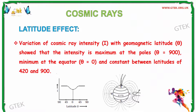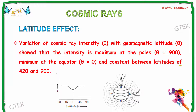Now let us see about the latitude effect. Variation of cosmic ray intensity i with geomagnetic latitude theta shows that the intensity is maximum at the poles, where theta is equal to 90°, and minimum at the equator, where theta is equal to 0°, and constant between latitudes of 42° and 90°. Below you can see the graphical representation of the latitude effect where intensity is taken on the y-axis and latitude theta is taken on the x-axis.